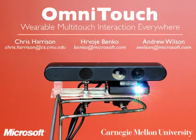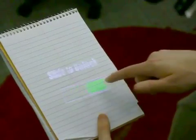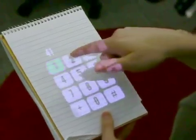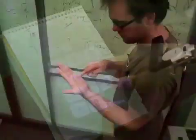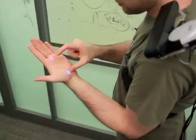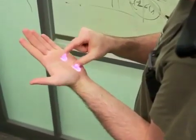OmniTouch uses a depth-camera-driven, template-matching and clustering approach for multi-touch finger tracking on everyday surfaces, including walls, doors, tables, notepads, books, and even one's own body.